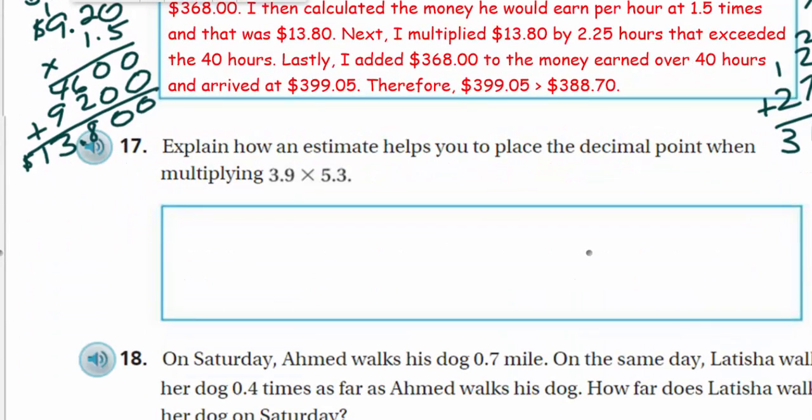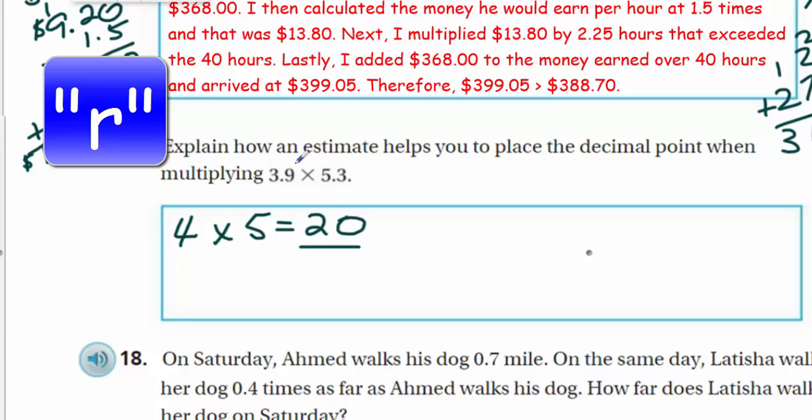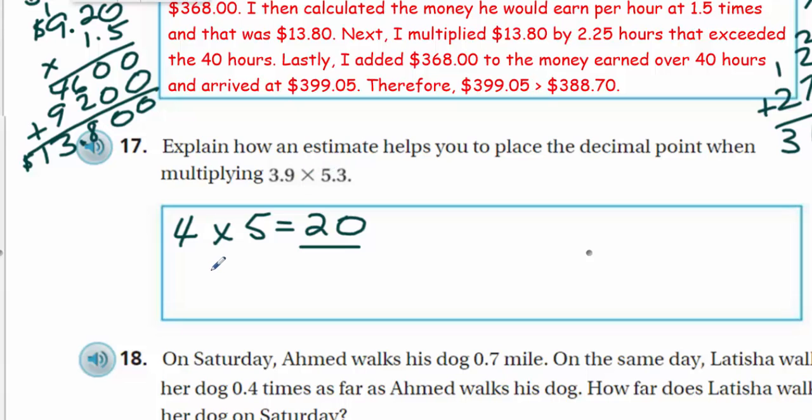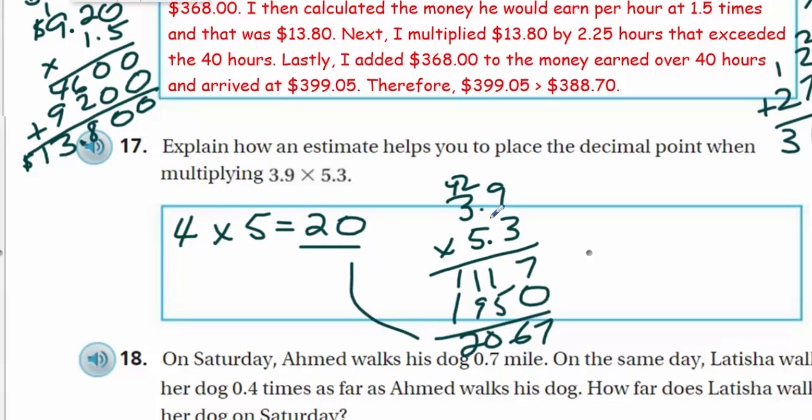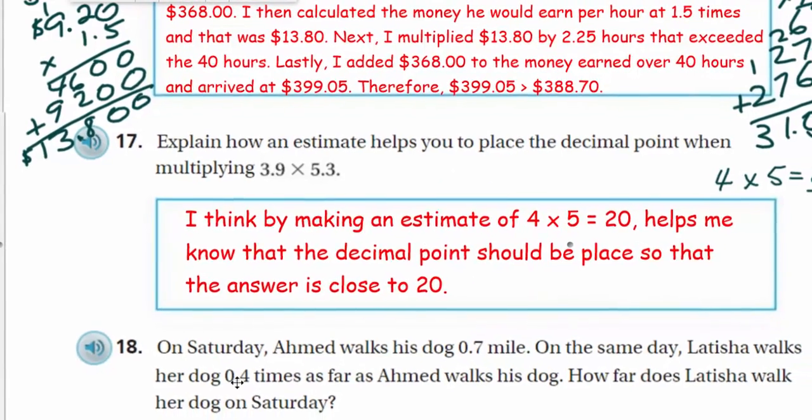Now let's explain how an estimate helps you to place a decimal point when multiplying 3.9 and 5.3. I think how an estimate would help me is by just multiplying. Like when I do an estimate, I would say 3.9 is really about 4 and 5.3 is about 5. And that's going to equal 20. So an estimate of 20 would be reasonable for the product of these two factors. If I were to multiply, it'll help me put the decimal in the correct place. See, if I multiply these through, I end up with 2067. That doesn't seem very reasonable if my estimate is saying 20. So where it's going to help me is remembering that. So I answered that question.